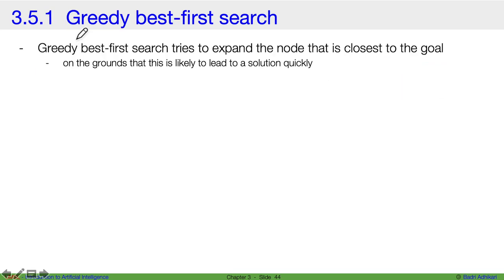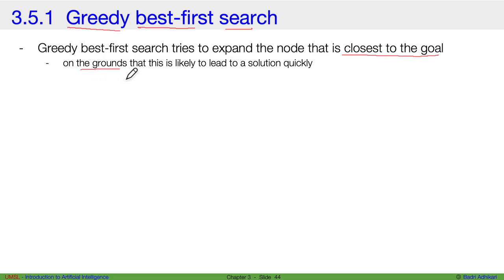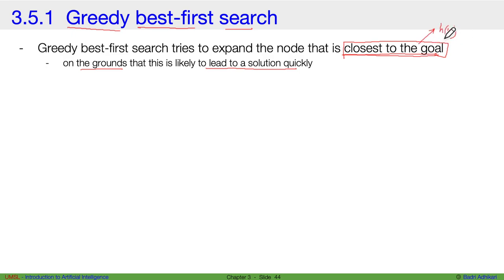Let's discuss the first kind of informed search algorithm: Greedy Best First Search. The greedy best first search tries to expand the node that is closest to the goal, assuming this is likely to lead to a solution quickly. The notion of "closest to the goal" is given by the heuristic function h(n).